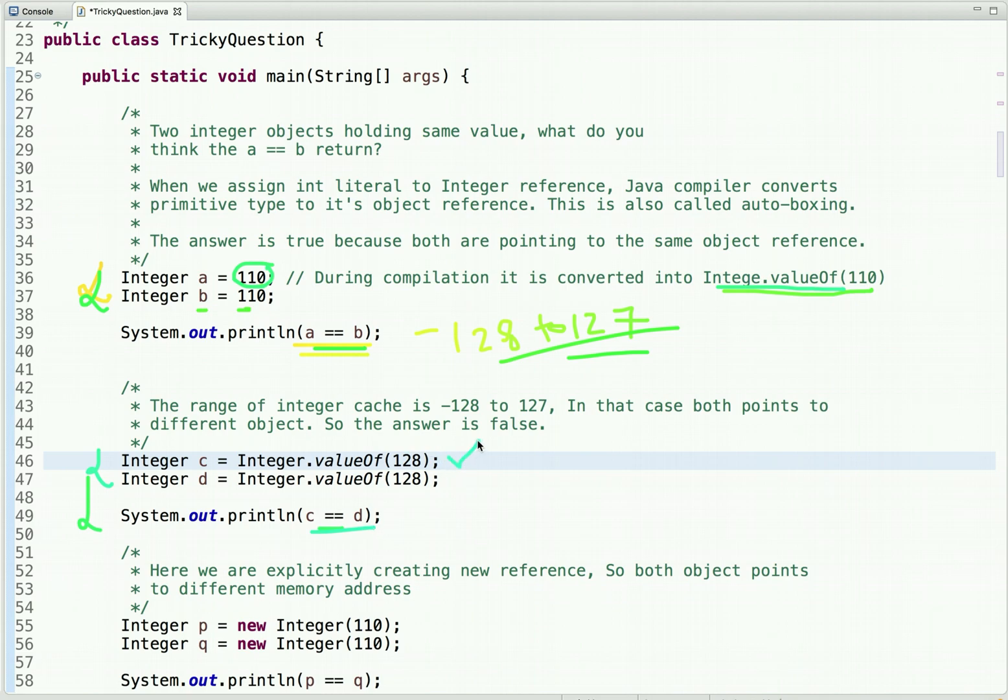So here we are creating one object and in next line we are creating other objects. And this 128, this value does not lie in this range. So this object is different and this object is different. So both points to different memory address. So when we do c equal to equal to d, the answer is false.